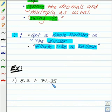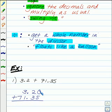3.2 plus 71.35. So we're adding, so we're going to line up our decimals, and it's going to drop like a rock. You can add zeros if you want to. And now we add 0 plus 5 is 5, 2 plus 3 is 5, 3 plus 1 is 4, and nothing plus 7 is 7. And our decimal drops straight down like a rock. So our answer is 74.55.